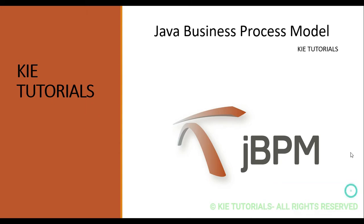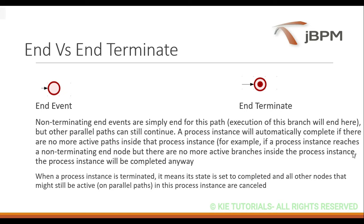Welcome to KAI tutorials. Today we are going to see what is an end event and what is an end terminate event. A business process will have one start and it may contain any number of end events. Two types of end events are there: one is a normal end event. Non-terminating end events simply end the path execution of the branch, but other parallel paths can still continue. A process instance will automatically complete if there are no more active paths inside that process instance.